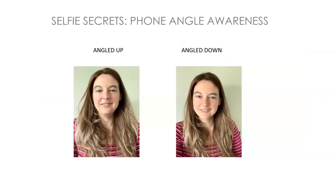Another simple tip: angling your phone directly up at you or level is not flattering for you or your subjects. You always want to be slightly above your subject and slightly looking down — whether it's a selfie or anyone else — otherwise you'll add extra weight to the face and create more shadows than you need to.